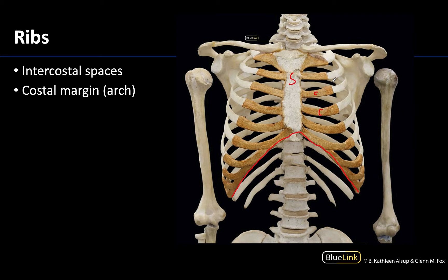The spaces between the ribs and the costal cartilages are going to be the intercostal spaces, and during life these would be filled with intercostal musculature as well as neurovasculature.